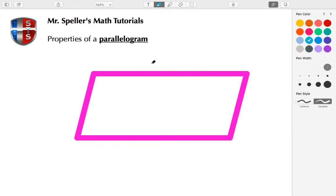Here we have a parallelogram. We know that the opposite sides are parallel, so let's place in some arrows to show that. We know that the top and bottom are also parallel, so let's place in the double arrows to show that.